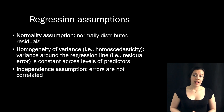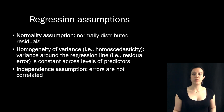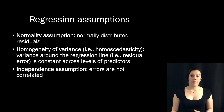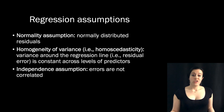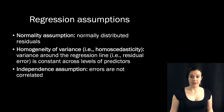Now the independence assumption is the one that would be violated if we ran a standard regression on those skipping class data. It states that your residuals should not be correlated. Simply put, if some of your data points are related to or influenced by some of your other data points, you've violated the independence assumption. Repeatedly rolling a die is a nice example of an independent process — the outcome of any roll is completely independent of previous rolls. The probability is always 1/6. But drawing cards from a deck without replacement is not independent — drawing a 2 of hearts reduces the probability of drawing another 2 relative to drawing a 3. The next draw is dependent upon your previous draw.